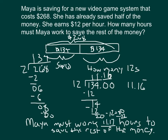This is a reasonable answer. If she worked 12 hours earning $12 per hour, she would have made 12 times 12, which is $144 — enough for the rest of the money. She had already saved half, and needed half remaining. So 11.17 hours — that's 11 hours plus 17 hundredths of the next hour — is reasonable.